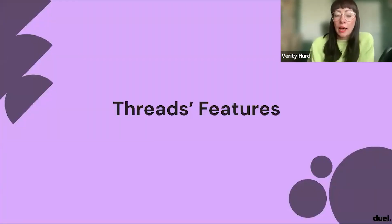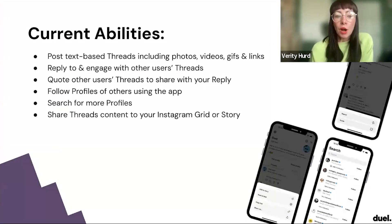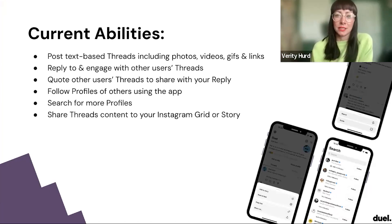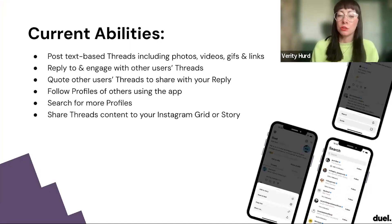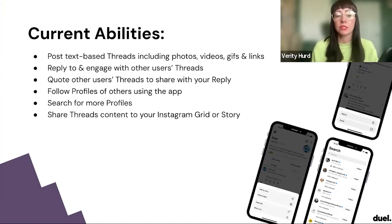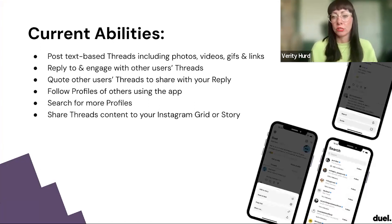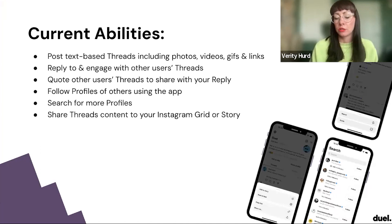Looking at current Threads abilities: you can post text-based threads including photos, video, GIFs and links. When you upload multiple photos, they have rounded corners and seamlessly flow from one to the other — and it looks really nice. You can reply to and engage with other users' threads, quote other users' threads to share with your reply, follow profiles and search for more. And a really good current feature is you can share Threads content to your Instagram grid or story, which is a great way to cross-promote your content across the two platforms.